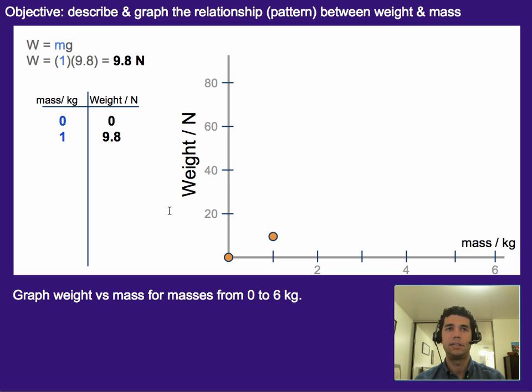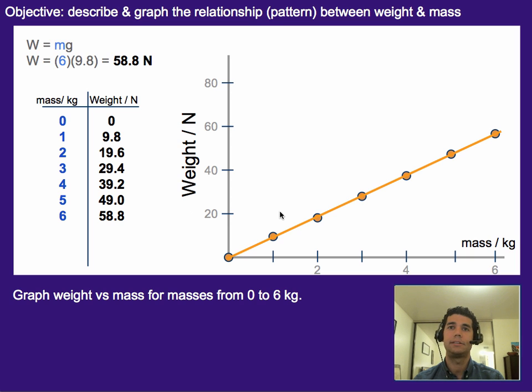If we plug in for 1 kilogram, then what we get is 9.8 newtons. Or if you're using 10, it would be 10. If you're plugging in for 2 kilograms, then that would be about 19.6 newtons. By plugging in 3, 29.4 newtons. 4 kilograms would be 39.2 newtons. 5 kilograms would be 49.0 newtons. And 6 kilograms would be 58.8 newtons. And what we get is a linear line or a linear trend.